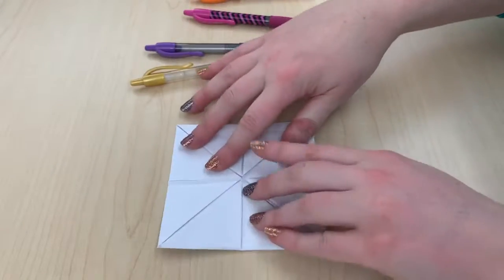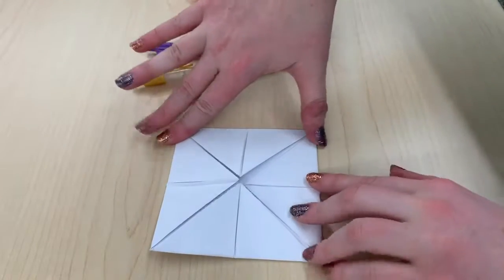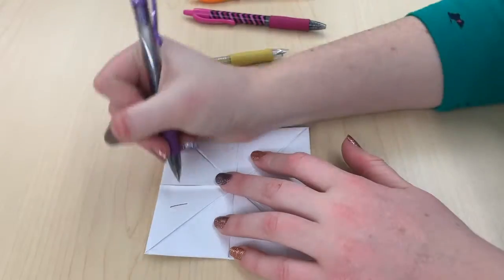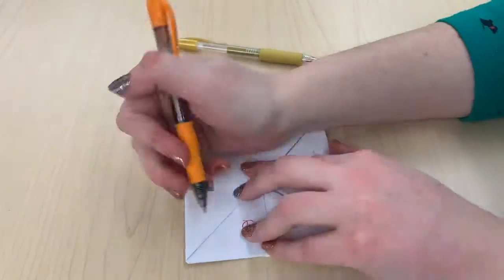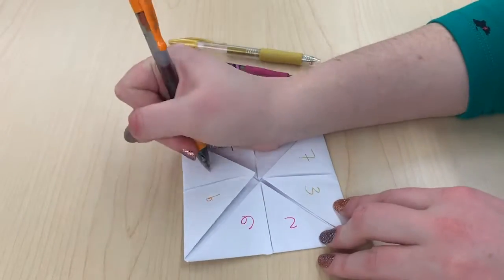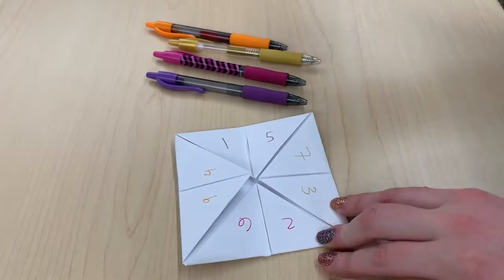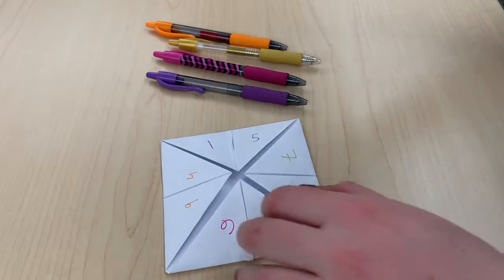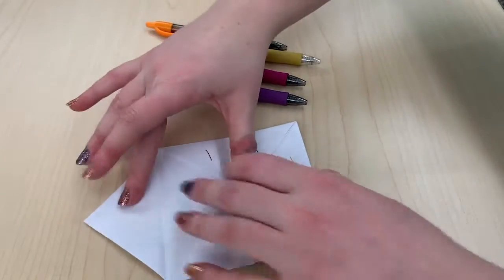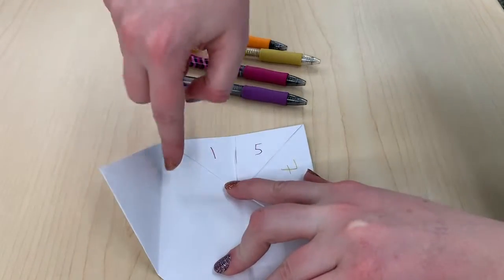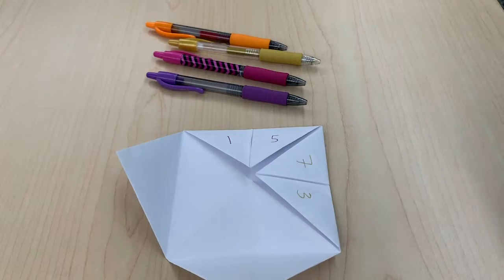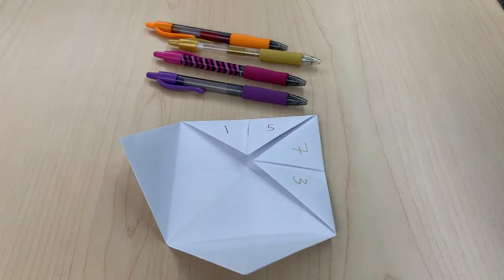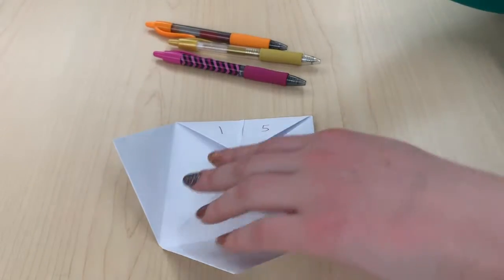And then these half diagonals in the center are going to be numbers. Those numbers don't have to be in any particular order. And then on the inside, in each of these, you're going to write a fortune. And so for this one, because I am a senior in college and rapidly approaching graduation, I'm going to go ahead and put careers in.